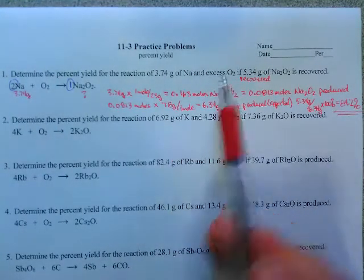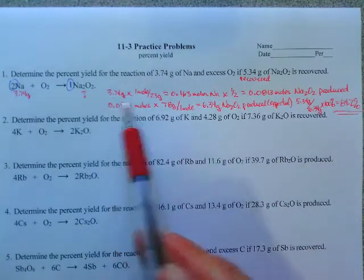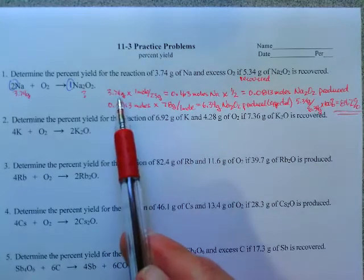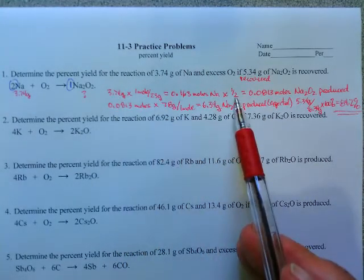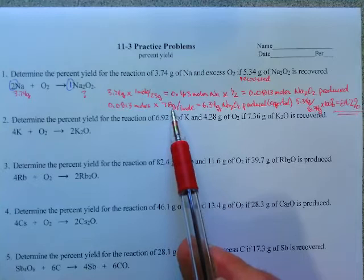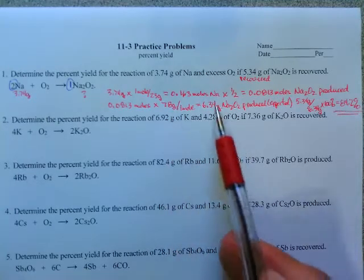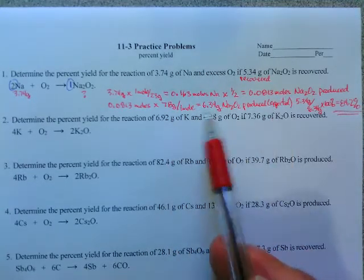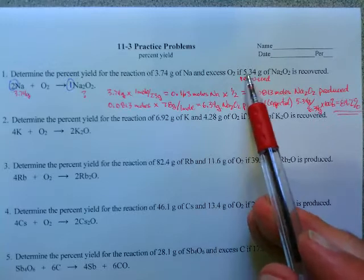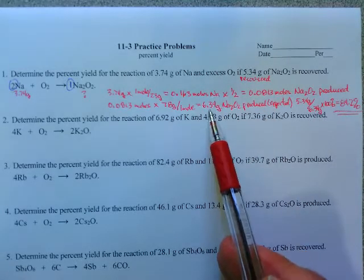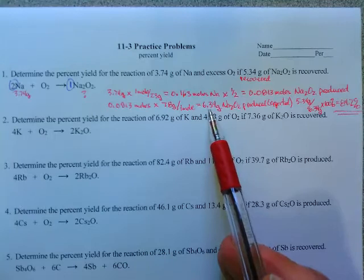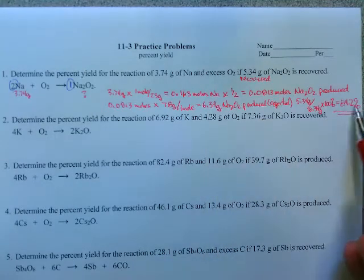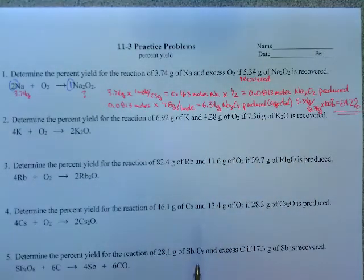So again, because we had excess, we could just go right through the three steps of stoichiometry: go to moles, mole ratio, go back to grams. Then once we know how much we were expected to make, we could take what was recovered divided by what was expected times 100 to get our percent.